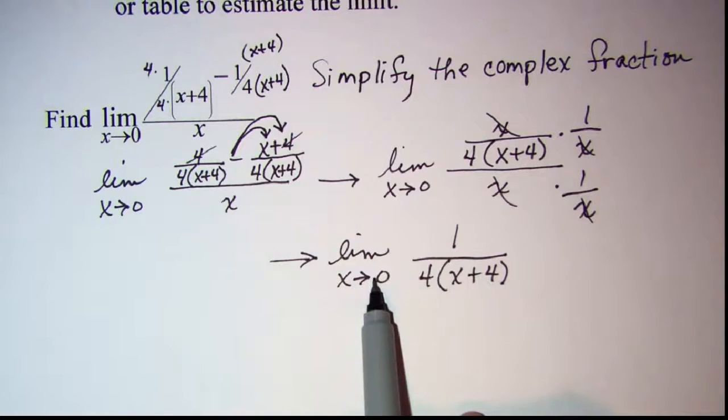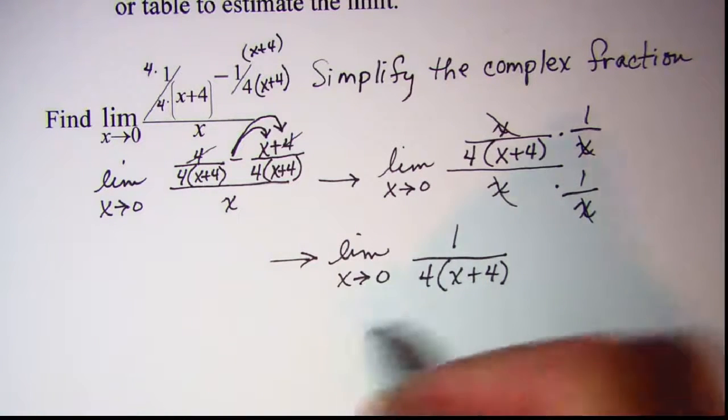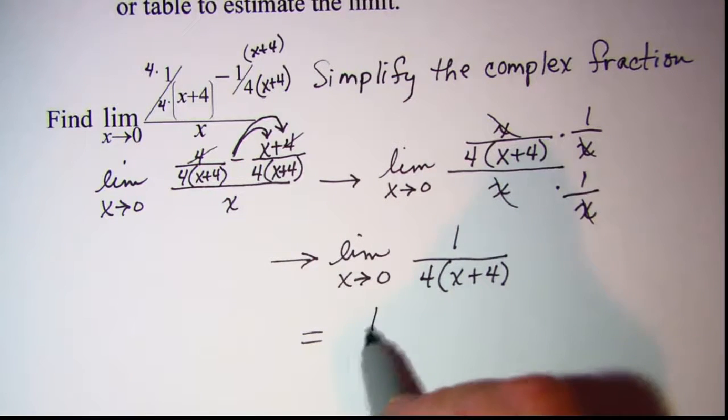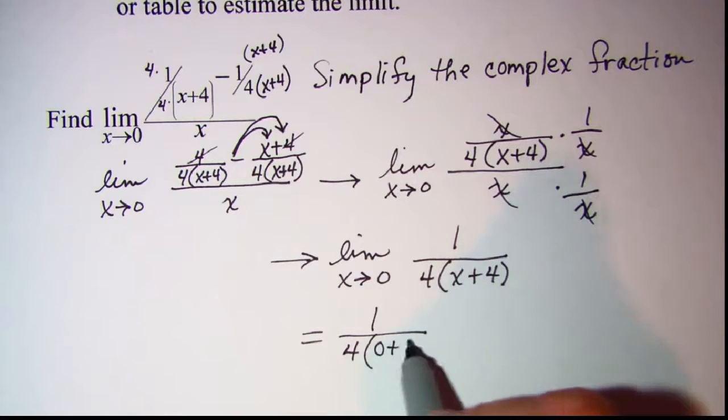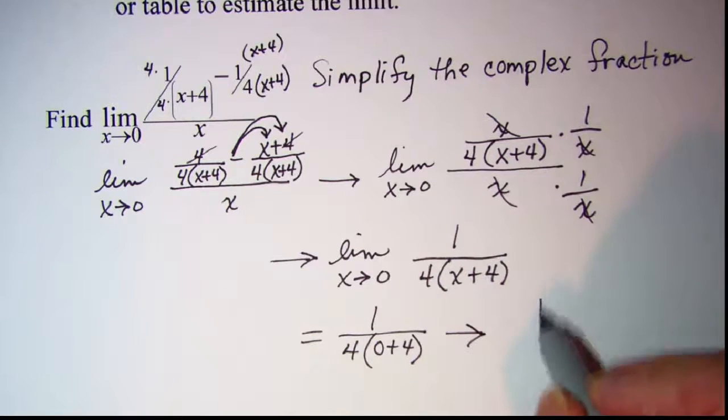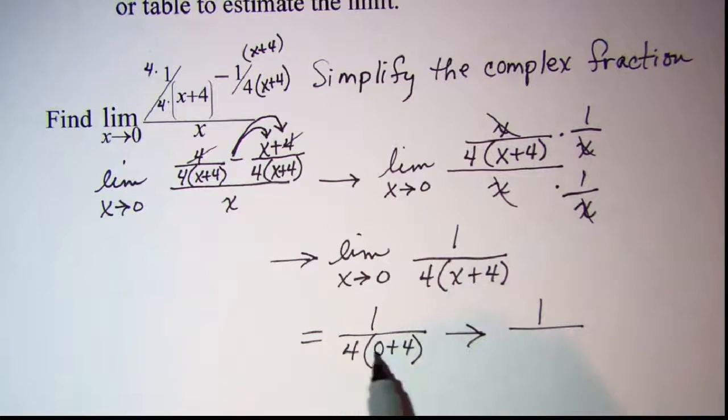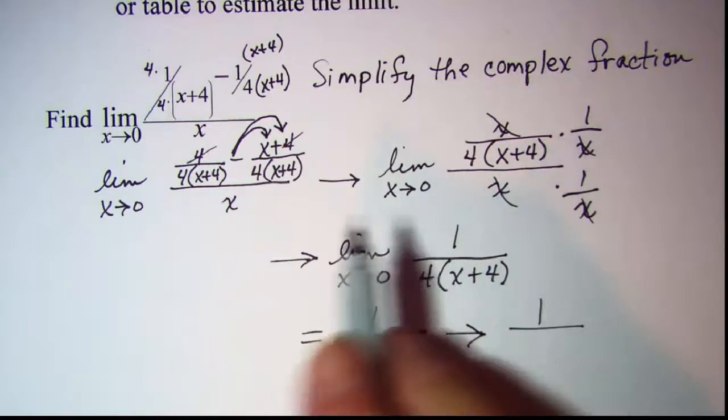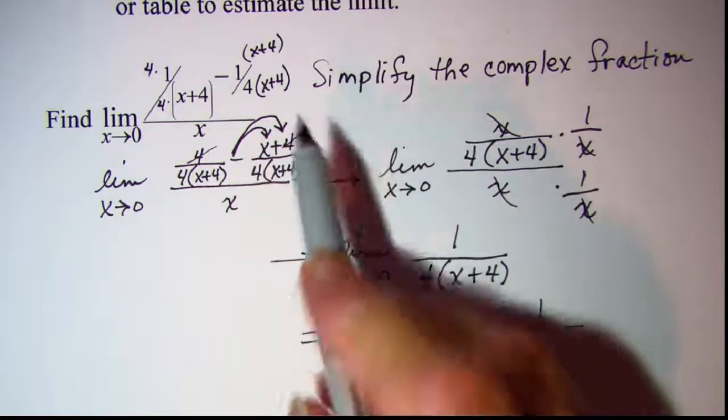Now I can use direct substitution. So this is equal to 1 over 4 times 0 plus 4, which is 1 over 4 times 4.